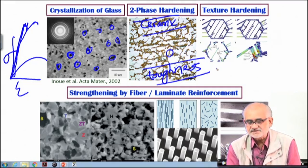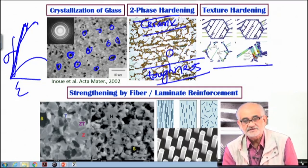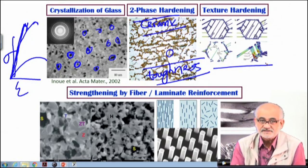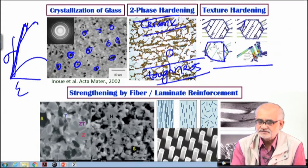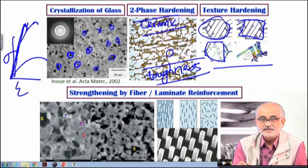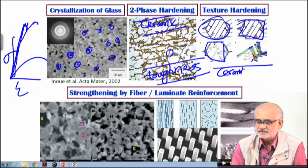We discussed a little bit about texturing in the previous discussion. The logic is exactly the same: if we can bring in a particular orientation, a specific orientation in the crystallites by way of certain thermally activated treatments, then the ceramic as a whole can behave in a slightly stronger way.